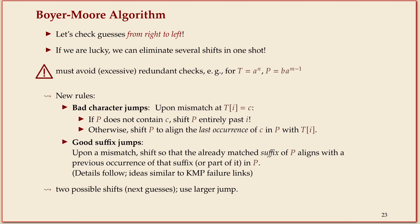This approach can go wrong in the very same way as the brute force algorithm — here's a concrete worst case example where you have to do all n times m comparisons if you just compare right to left. To avoid that, we have to use something like the failure links in KMP — we have to exploit the knowledge already gained during comparisons, which turns out to be roughly as tricky as for KMP. But we want to keep the right-to-left order, so instead there are two new rules that often work super well.